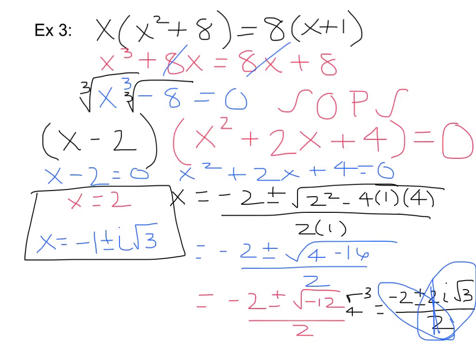The two answers are x equals 2 and x equals negative 1 plus or minus i root 3. Since we started with x cubed as the highest degree, there should be 3 answers — and there are.